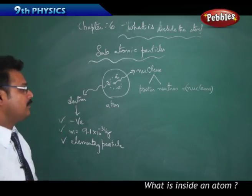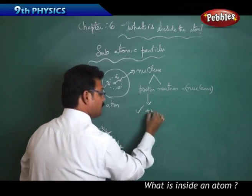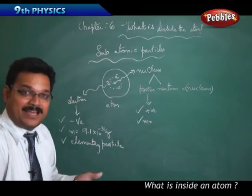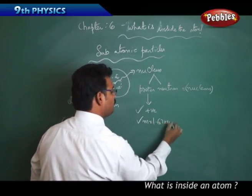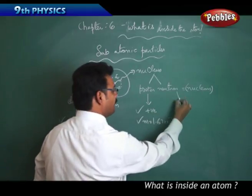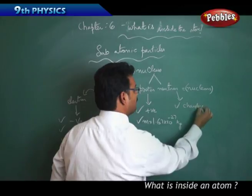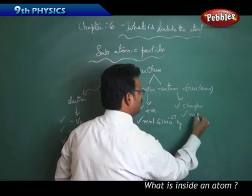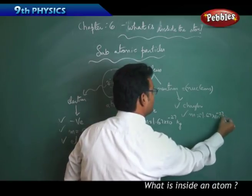Coming to proton — proton has a positive charge and its mass is heavier than the electron's mass. The mass of the proton is 1.67 × 10⁻²⁷ kg. Coming to neutron — neutron is chargeless, it doesn't have any charge, and its mass is approximately equal to the proton's mass, which is also 1.67 × 10⁻²⁷ kg.